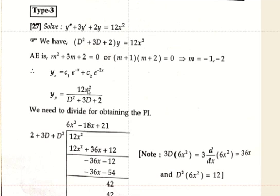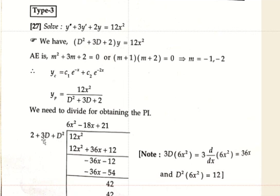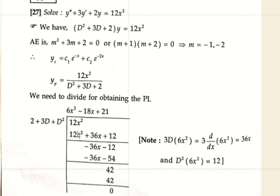To find yp, write yp = 12x² / (D² + 3D + 2). Write the numerator 12x² in decreasing power of x and the denominator in ascending power of D: first 2, then 3D, then D². Now divide.